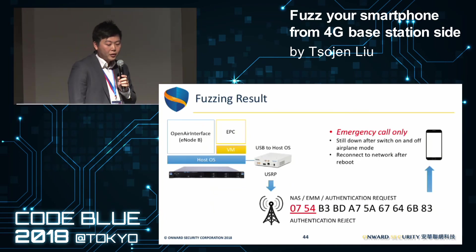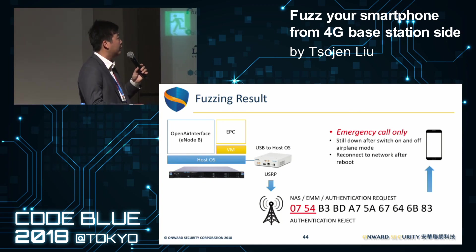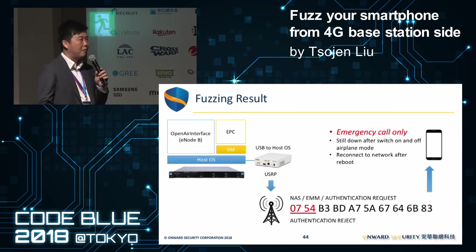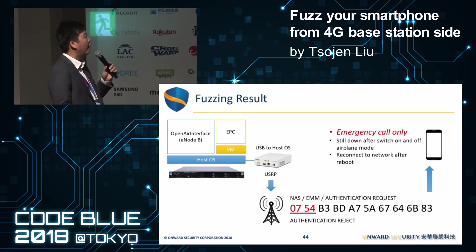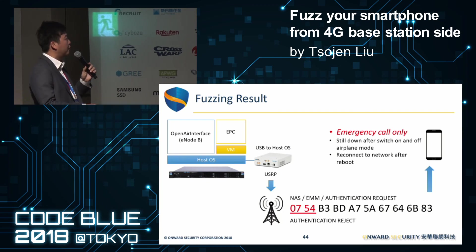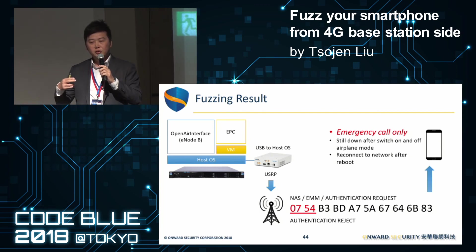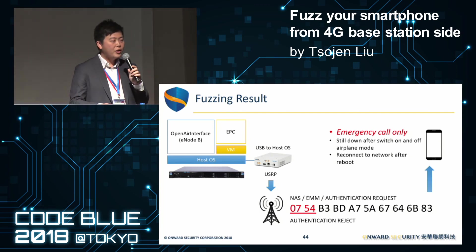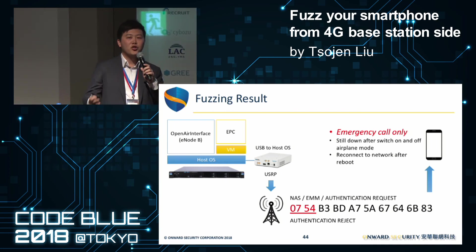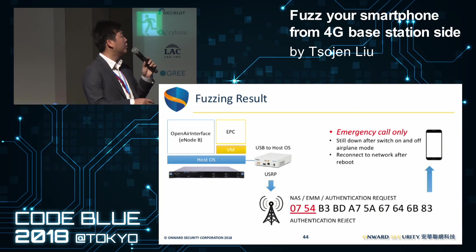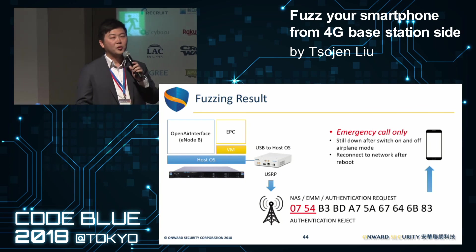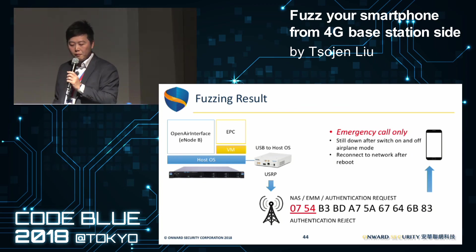Here are our fuzzing results. When a device using a Qualcomm Snapdragon S800 processor connects to our base station, it may be vulnerable. When the smartphone receives an NAS authentication message — message type 0x07, specifically starting with 0x0754, which is the authentication reject message — sending a single malformed authentication reject packet causes the smartphone to switch to emergency-call-only mode. Even switching airplane mode on and off does not restore normal service; the only way to recover is to reboot the device.